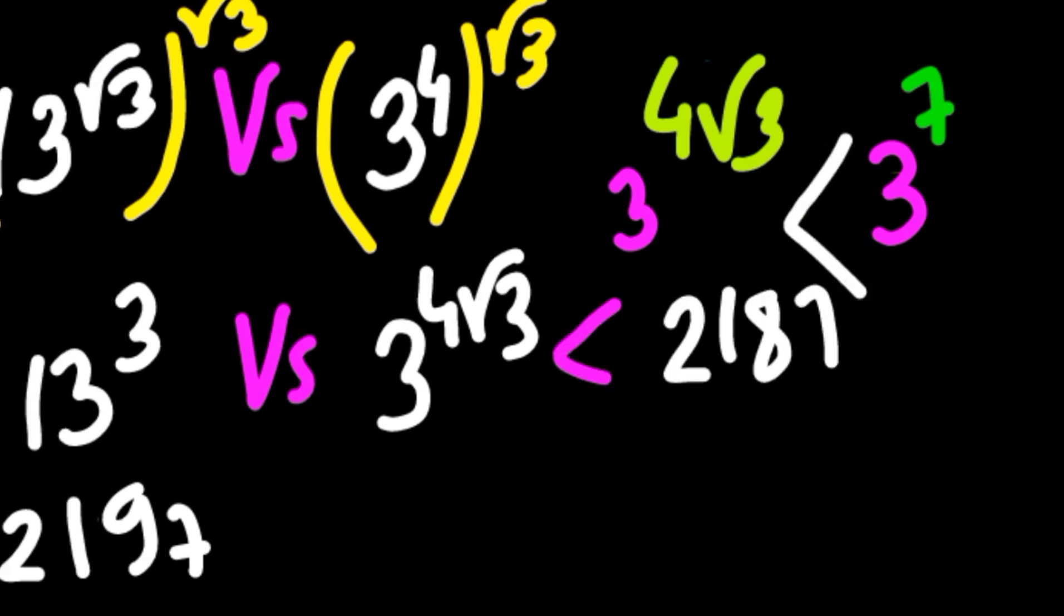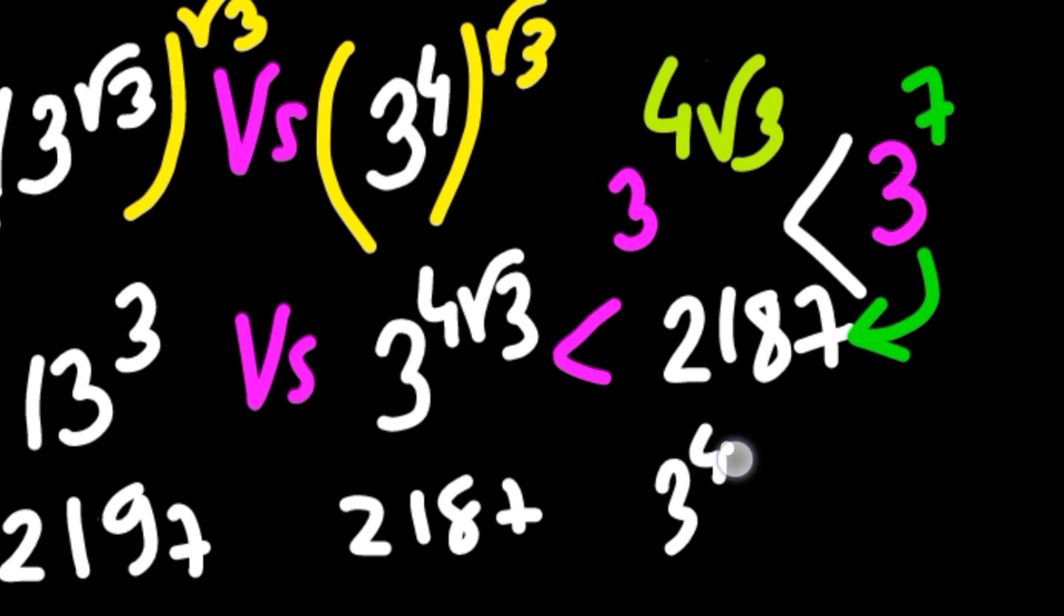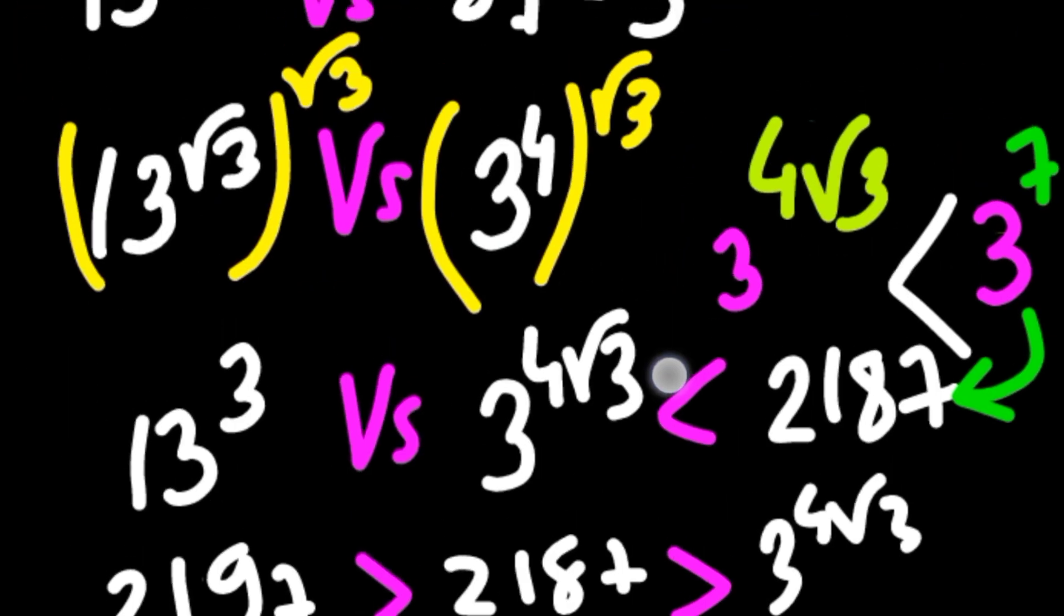3 to the power 7 is about 2,187, which is bigger than 3 to the power 4 times root over 3. This whole results in that 2,197 is greater than 2,187, which is also greater than 3 to the power 4 times root over 3.